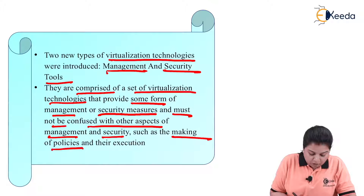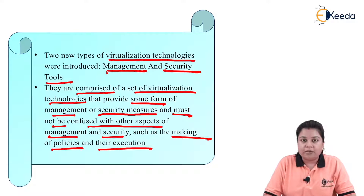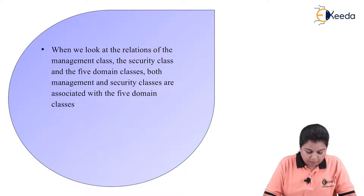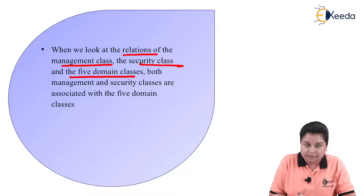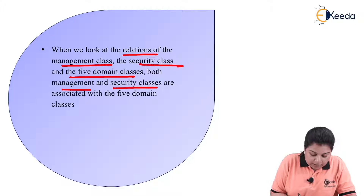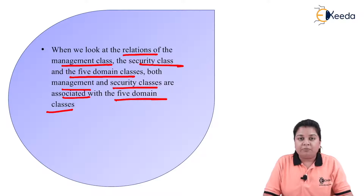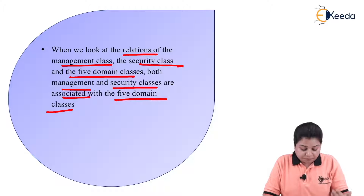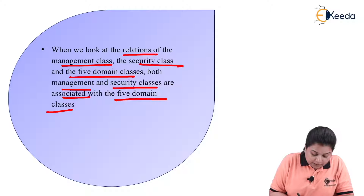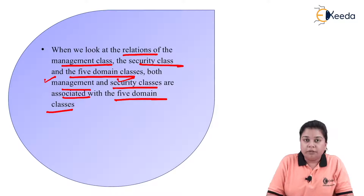Such as the making of policies and their execution. When we look at the relations of the management class, the security class, and the five domain classes, both management and security classes are associated with the five domain classes — that is server, application, desktop, operating system, and network — all are related to the management and security tool classes.